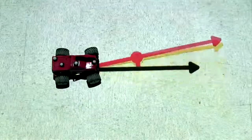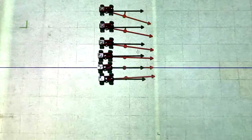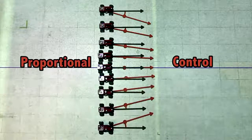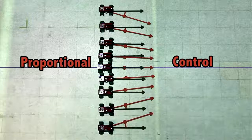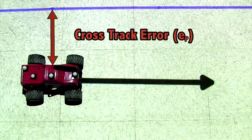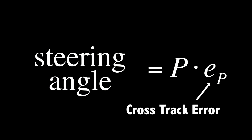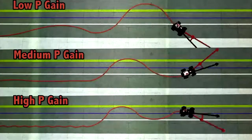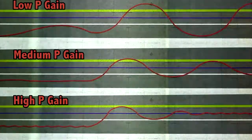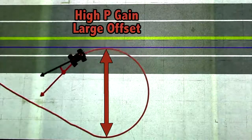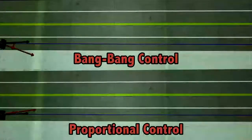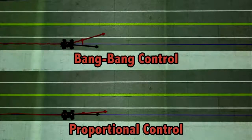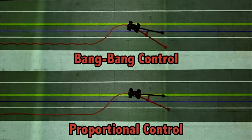If the steering wheel is turned a fixed amount left or right, this approach is called bang-bang control. For controlling a car this doesn't work well — the response is very jerky and uncomfortable. One way to set the steering wheel angle is to use proportional control: rather than turning a fixed amount, proportional control steers harder the further away we are from the desired trajectory, using a measurement called the cross-track error multiplied by a proportional gain.